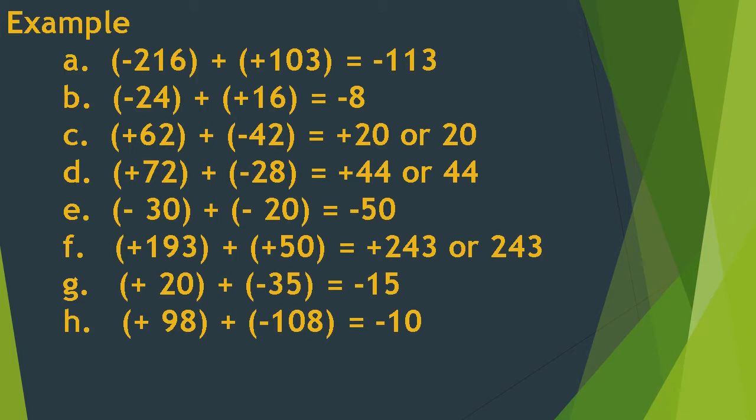Example, Letter A: negative 216 plus positive 103 is equal to negative 113. In this case, 216 is the greater number, so we affix the sign of the greater number, which is negative.